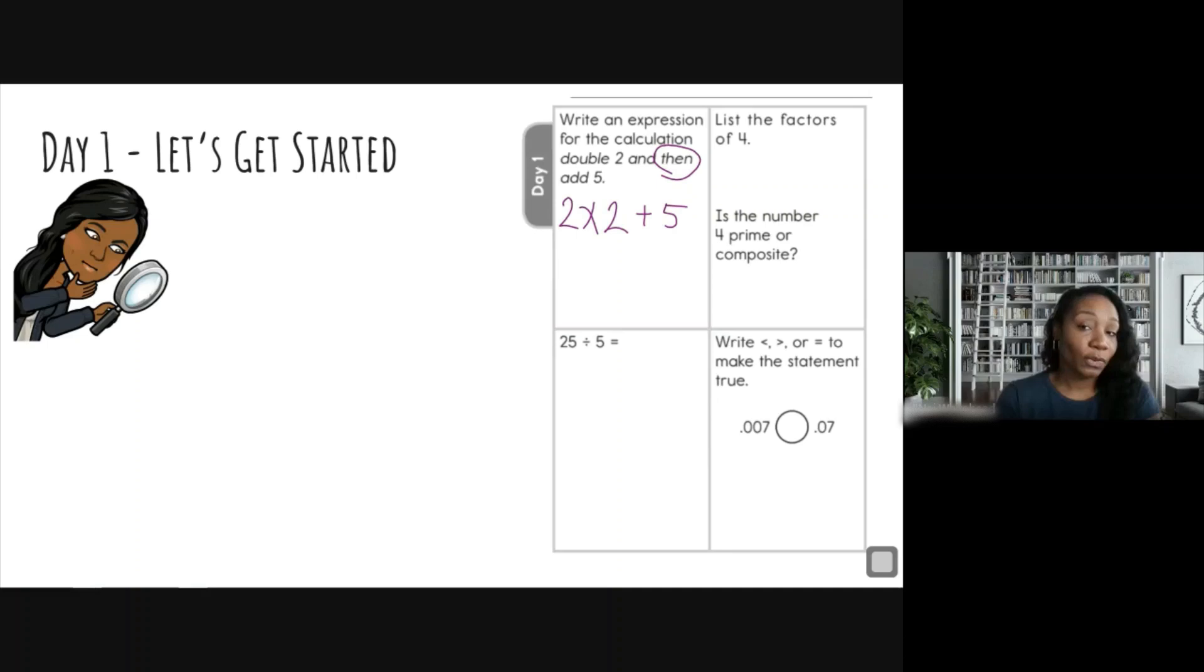Now because we are in fifth grade, we're going to put parentheses around the first steps. So we're going to put parentheses around two times two because that's the first thing that we need to complete.